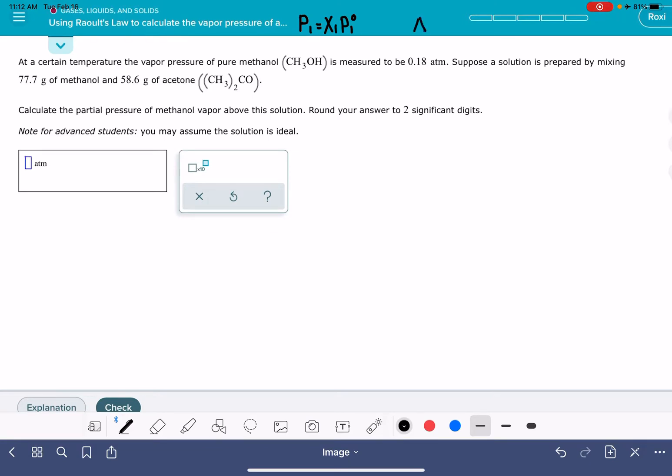The other version of Raoult's law says that the change in partial pressure or vapor pressure for a substance is equal to the mole fraction of the other component of the solution times the original vapor pressure.